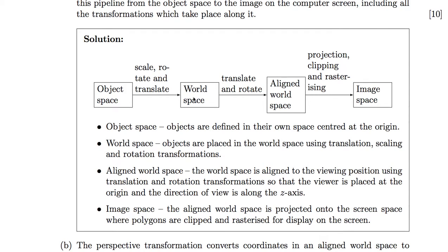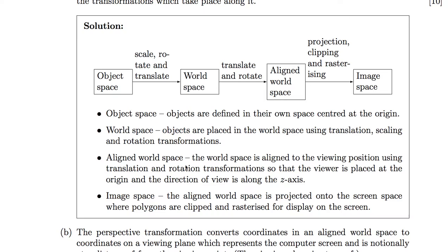The world space is then aligned to the viewing position. The viewing position is at the origin and the direction of view is along the Z axis. This is done by translation and rotation operations. From the aligned world space we get to the image space. This involves projection onto a 2D projection plane, clipping to the boundaries of our screen space, and rasterizing — converting to pixels.